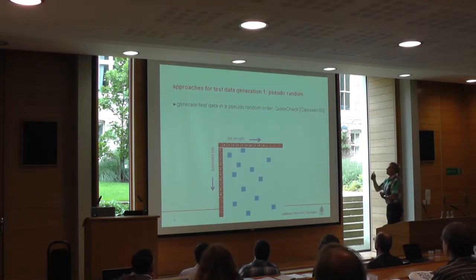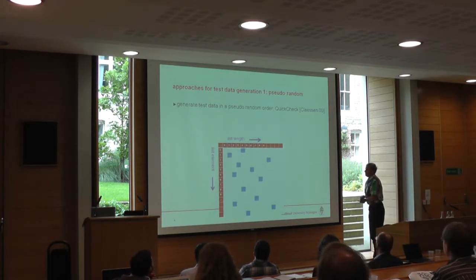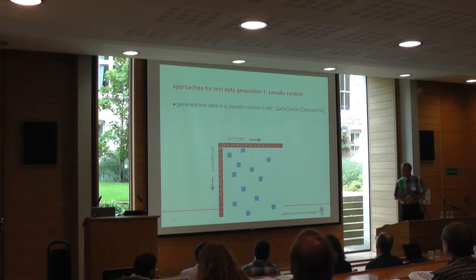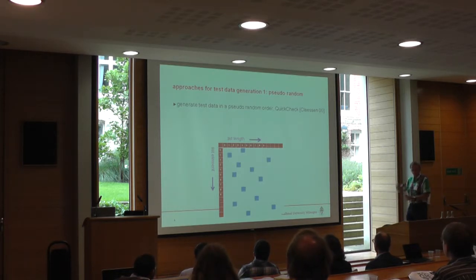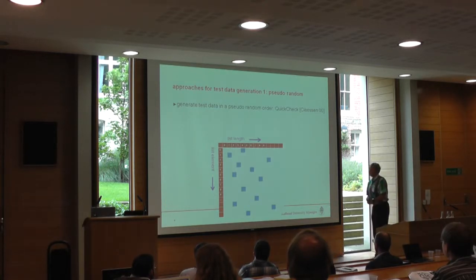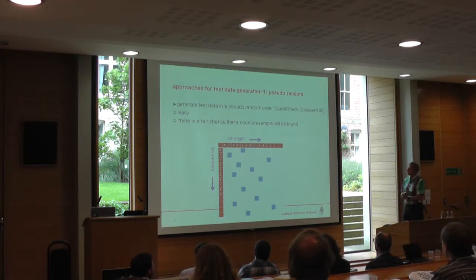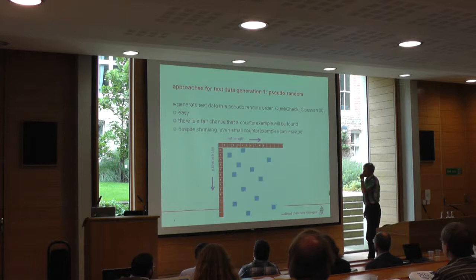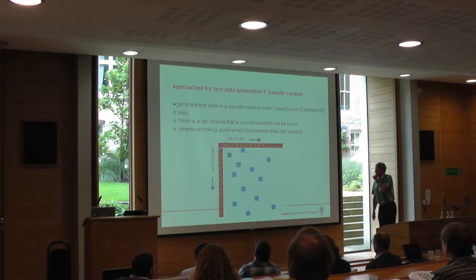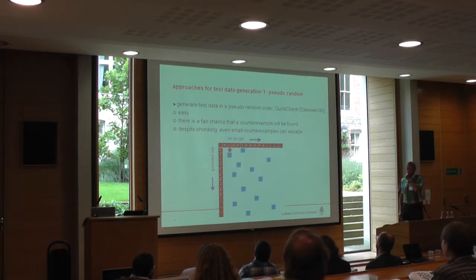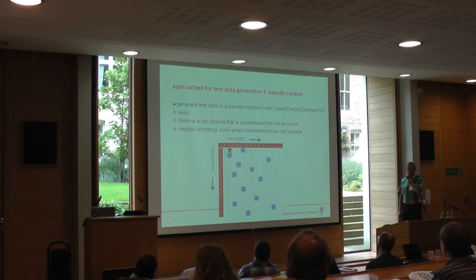What approaches are there for test data generation? You can do random testing — fix some values in the data space and see if you can find errors. There's a fair chance that if there's a counter-example to my property, it will be found. The downside is that, despite shrinking, even small counter-examples can escape, and large counter-examples will probably also escape.